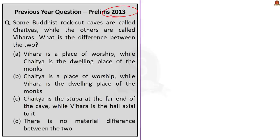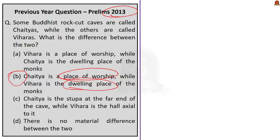Option A: Vihara is a place of worship while Chaitya is a dwelling place of monks. Option B: Chaitya is a place of worship while Vihara is the dwelling place of monks. Option C: Chaitya is a stupa at the far end of the cave while Vihara is the hall axial to it. Option D: There is no material difference between the two. The correct answer is Option B — Chaitya is a meeting or assembly chamber used for prayer, while Viharas are shelter accommodations for monks during the rainy season.